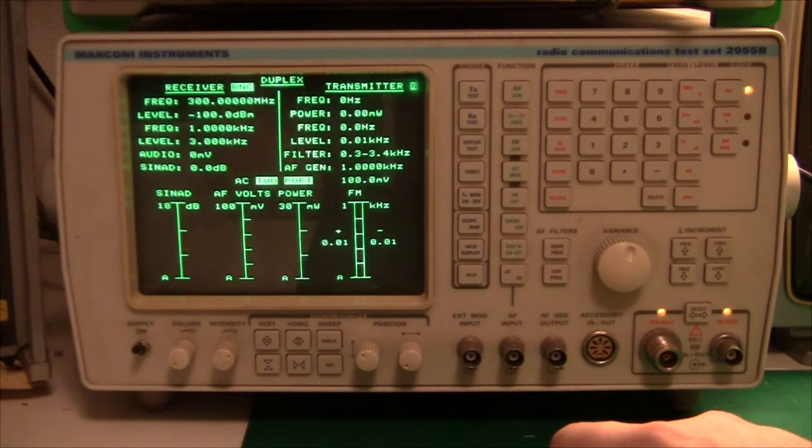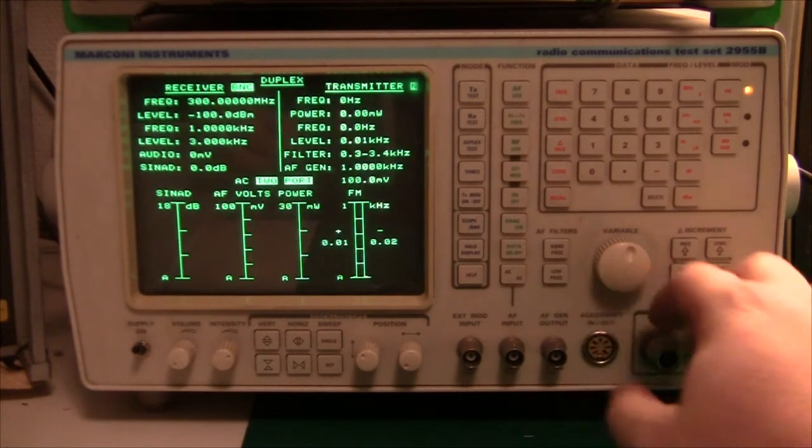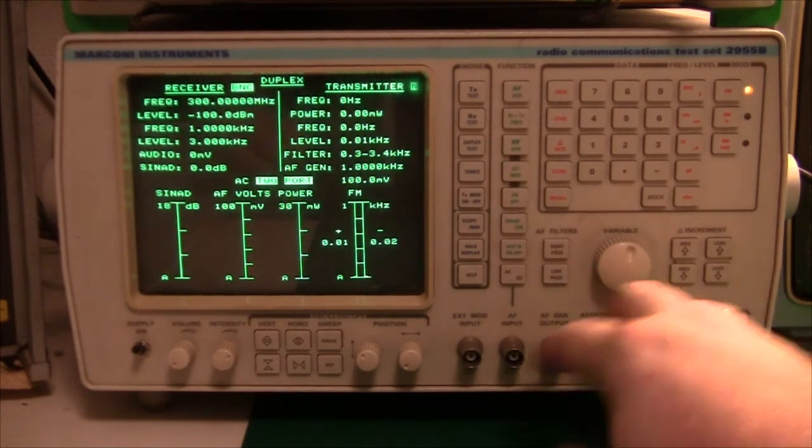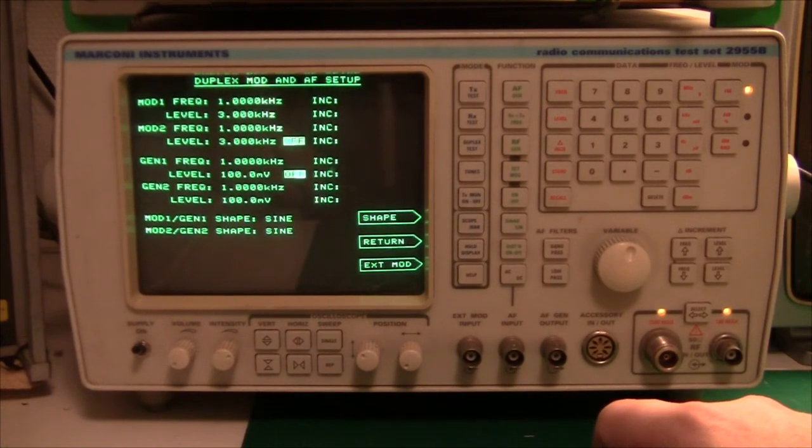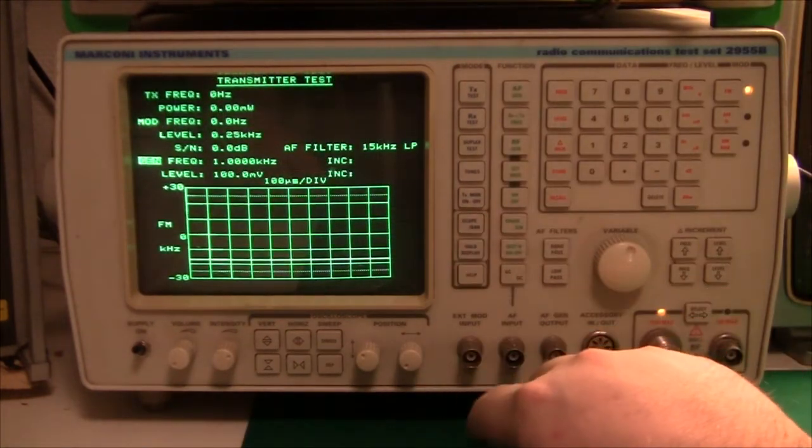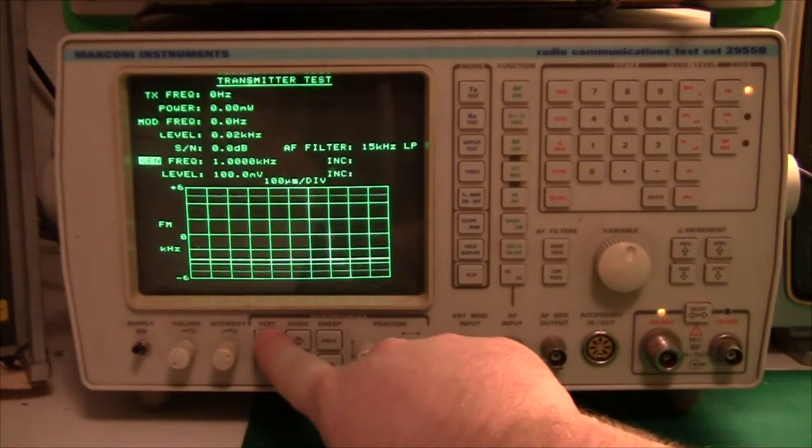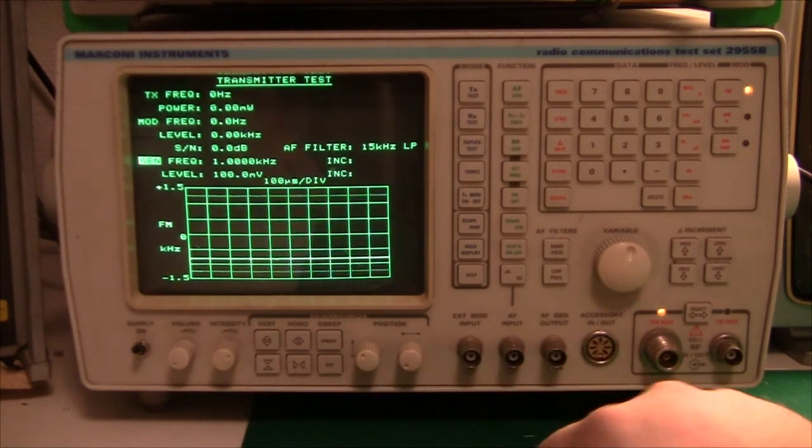And the next test is duplex testing. And in that way, we can test the receiver and the transmitter at the same time. So if you have some duplex radio that can both broadcast and receive at the same time, you can test it here. You have antenna in and out, there are different audio tones. As I said, we can send out different frequencies and we can mix them together, so we can also get some intermodulation distortion measurements. We have a little oscilloscope down here, so we can see the audio coming out of the receiver, for example. So that is quite interesting.